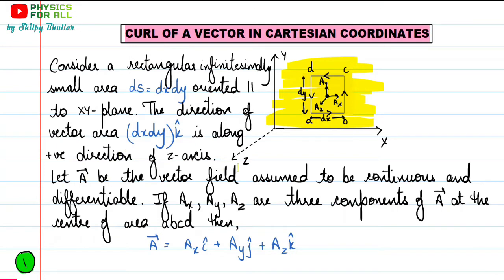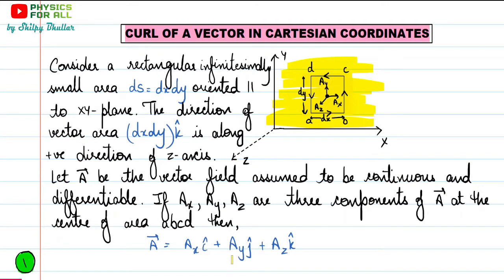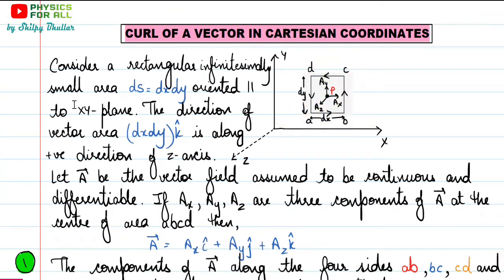This A is the vector field. Whenever we have to perform partial differentiation and use the DEL operator, the vector field has to be continuous and differentiable. AX, AY, and AZ are the components of the vector field along the three coordinates. So we can write vector A as AX î + AY ĵ + AZ k̂, which is the general representation of any vector. We have considered a point P at the center of ABCD, and AX, AY, and AZ are the values of the X, Y, and Z components at that particular point P.